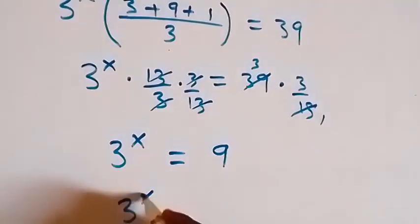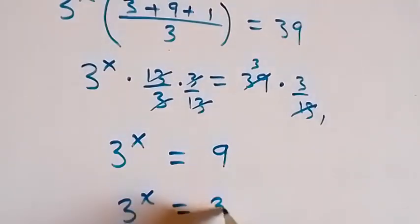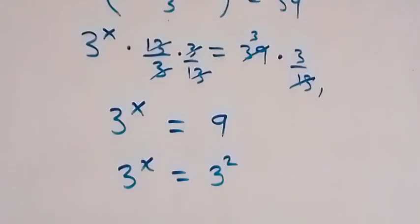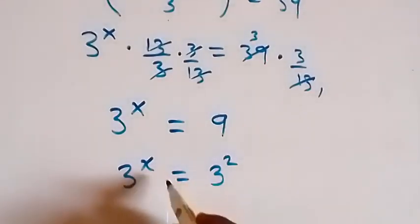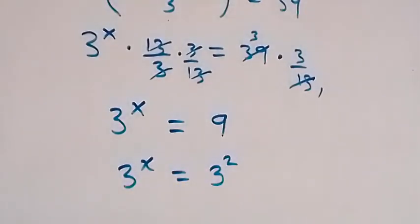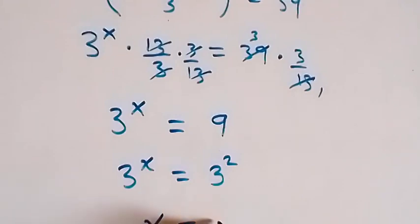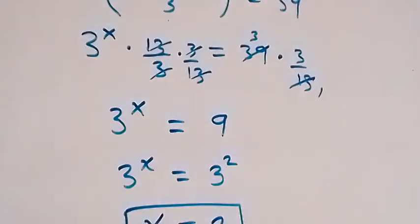So, we have 3 raised to power x now equals to 3 squared. From here, we have the same base, so we equate the powers. That means x equals to 2. So we have x equals to 2 from this problem.